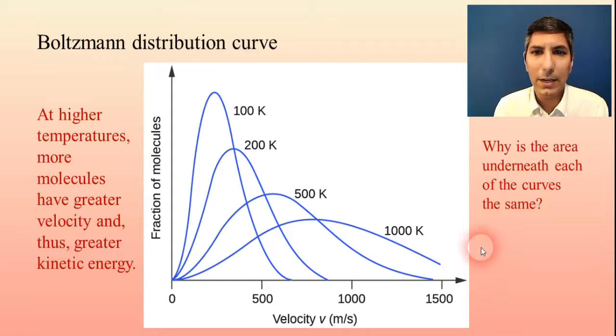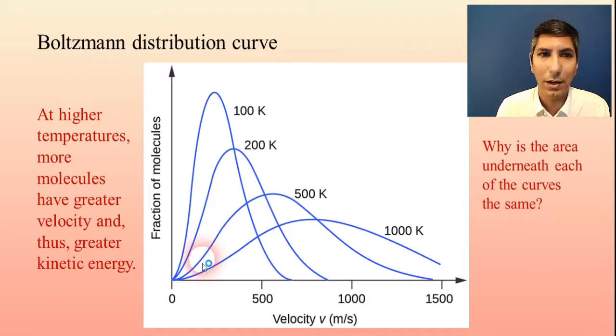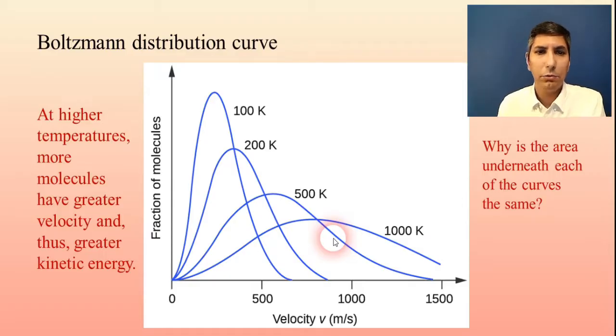Now, question, why is the area underneath each of the curves the same? Well, this has to do with the fact that we're talking about the same sample of gas. And so we should have the same number of gas molecules for each temperature. All we're doing is raising the temperature. So the distribution is flattened out, and it seems to be distributed toward the front side much more as you raise the temperature.